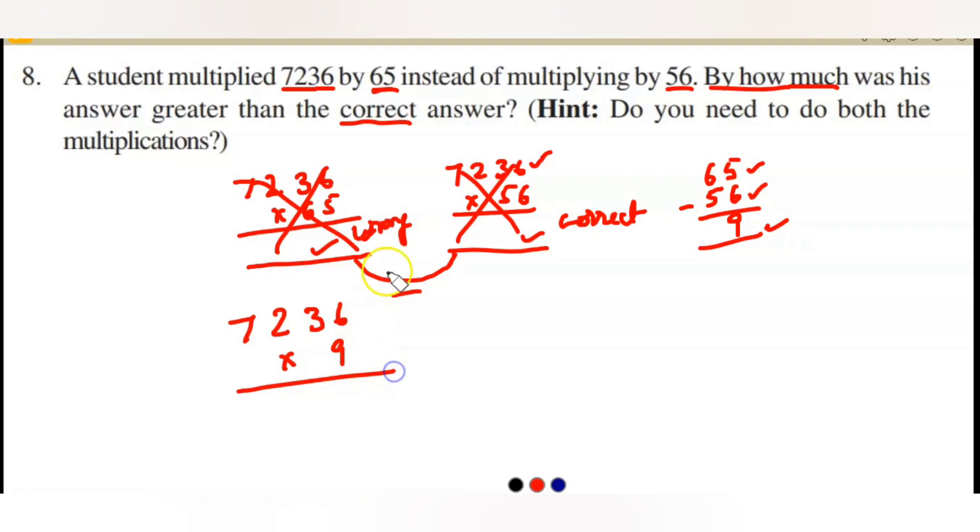What shall we do? Let us multiply 7,236 with 9. That's enough. No need to do with 65 and 56 and get the two answers and then do subtraction. Instead, you can beforehand subtract how many times more he has taken the number. Instead of 56, he has taken 65. So 9 times he has multiplied more. 7,236 multiplied by 9 gives you the difference of these two answers, not the correct answer. Directly you will get the difference.